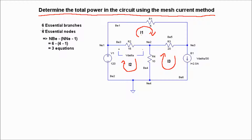In order to analyze this, we have six essential branches and four essential nodes. Essential branches are branches that are connected to more than one other device. Here's essential branch number one, essential branch number two, essential branch number three, essential branch number four, essential branch number five, and branch number six — six essential branches. And we have essential node one, essential node two, essential node three, and essential node four, which we decided to make a reference.